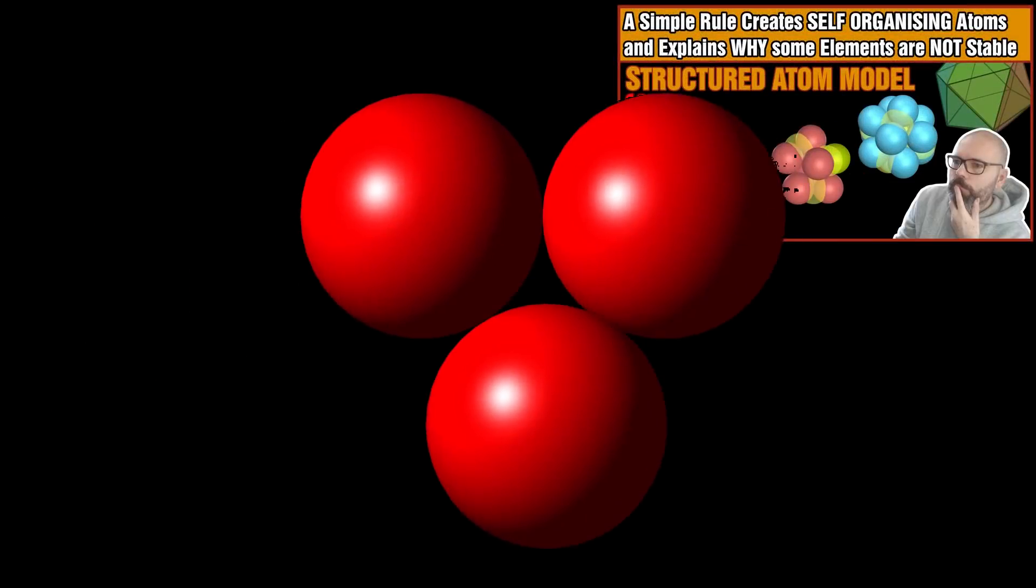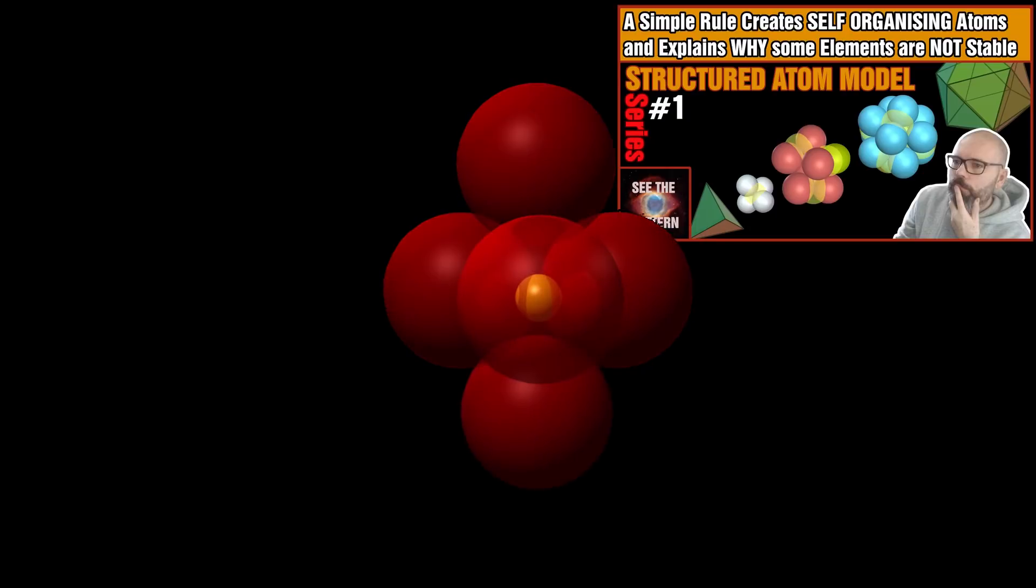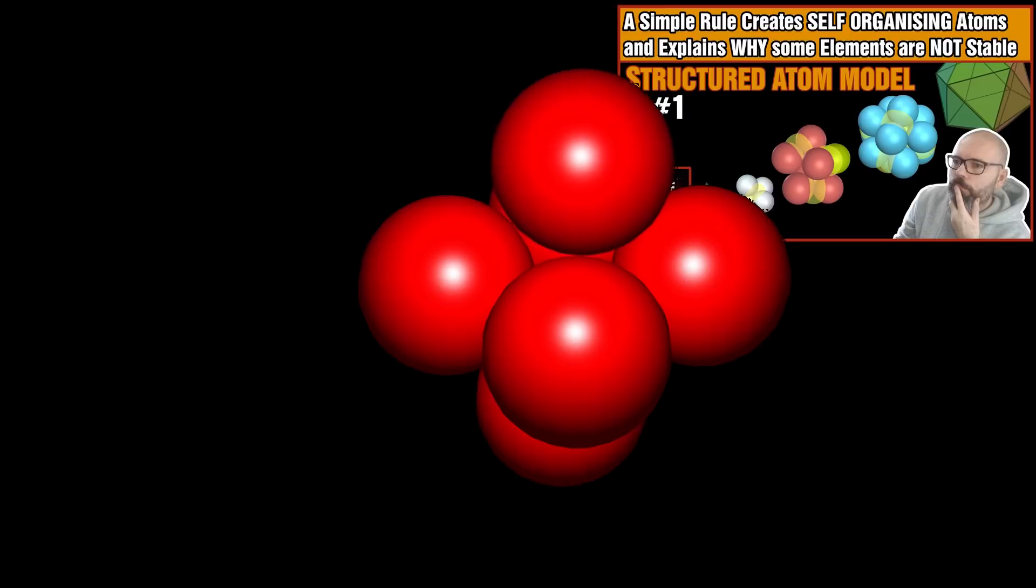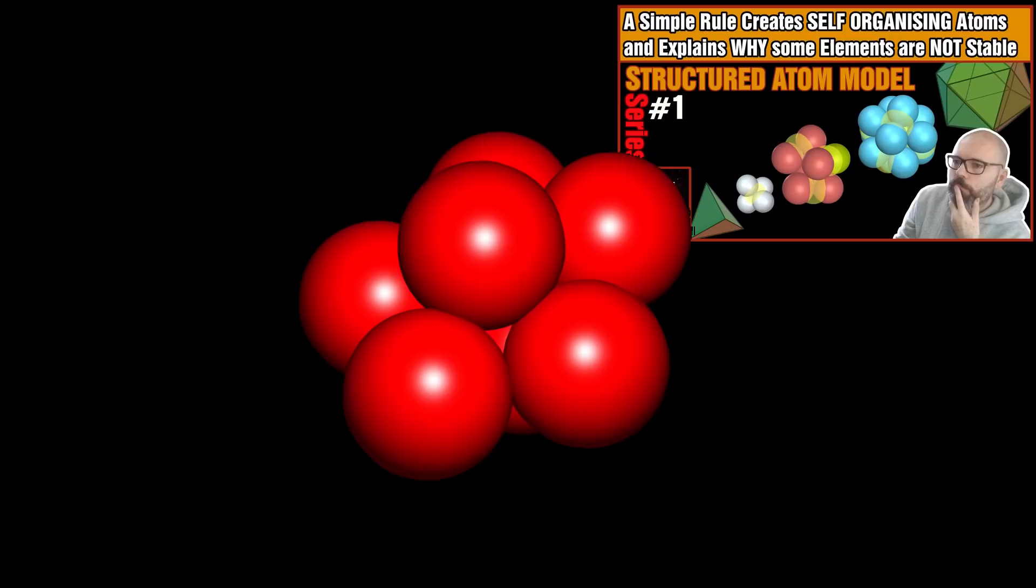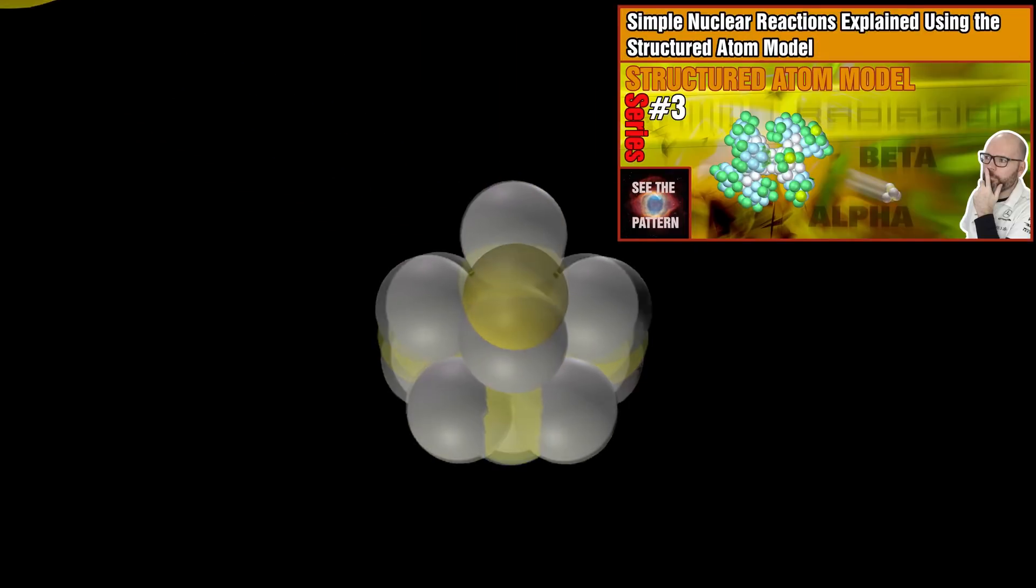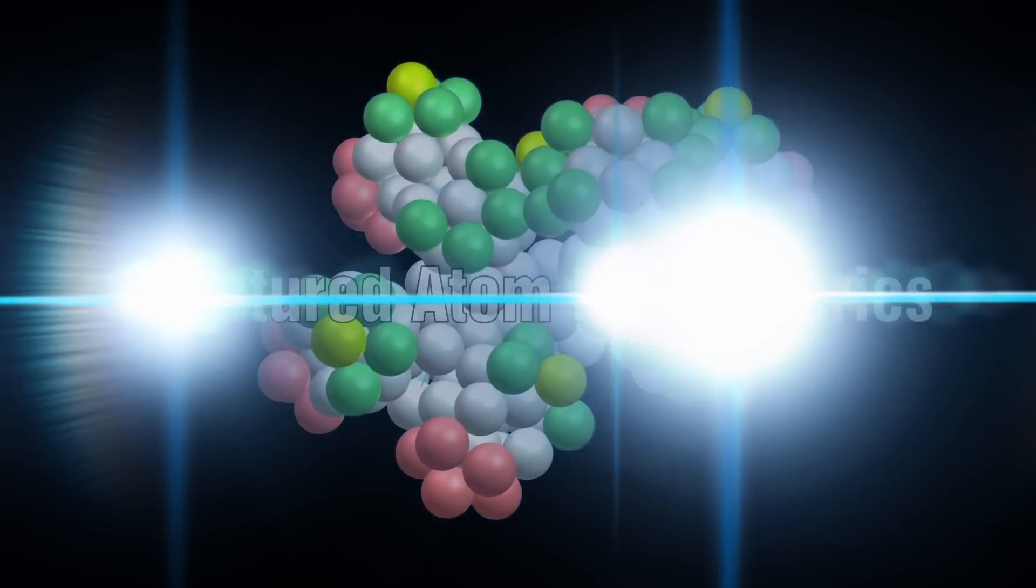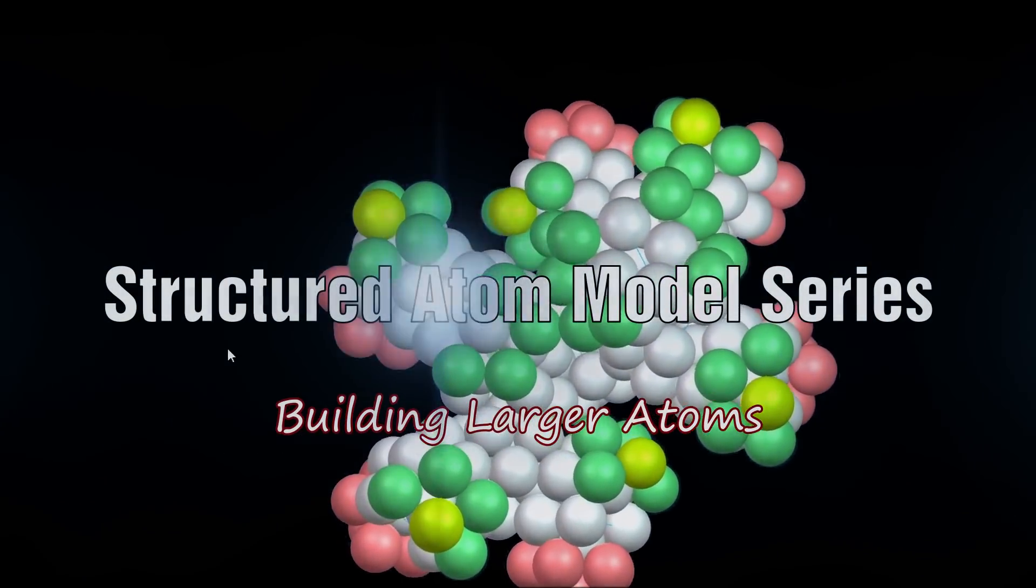We've already covered how the nucleus can grow through the rules of spherical dense packing. This was accomplished by adding proton-electron pairs to a nucleus and then correcting for the number of electrons via beta decay. The simple nuclear reactions we covered previously are used throughout the process of building larger atoms. Let's examine how we construct the larger atoms using the structured atom model.